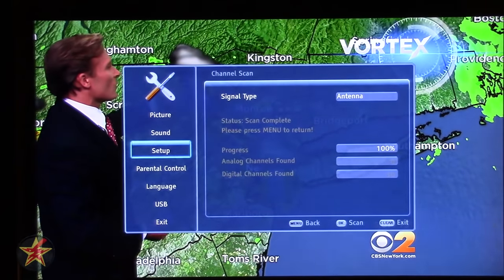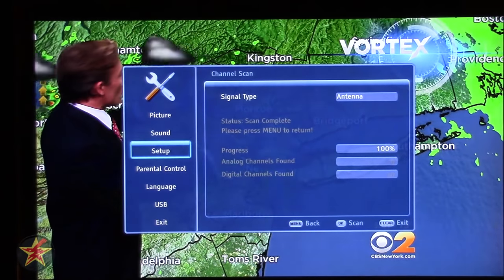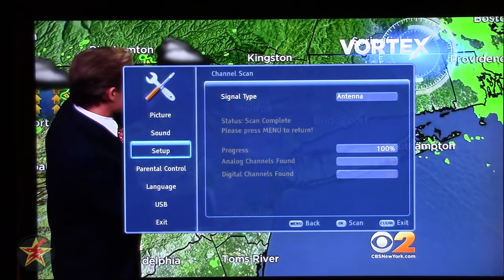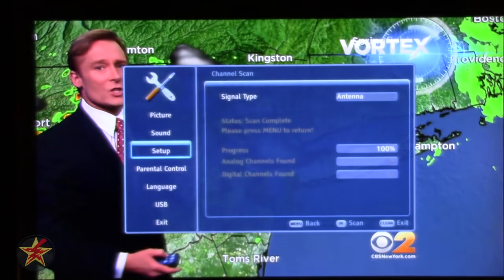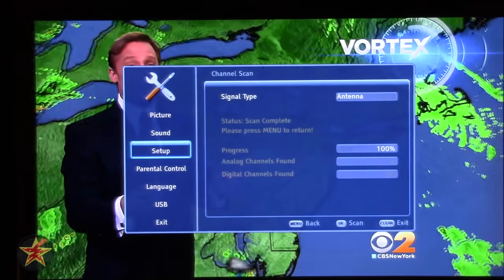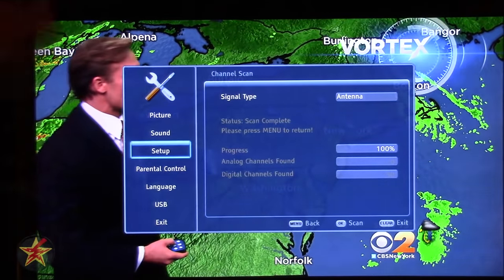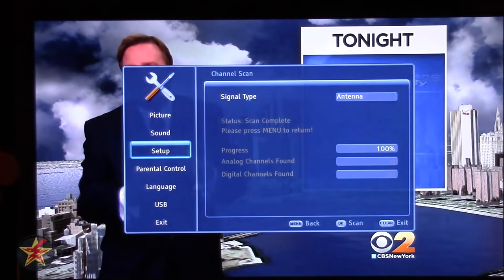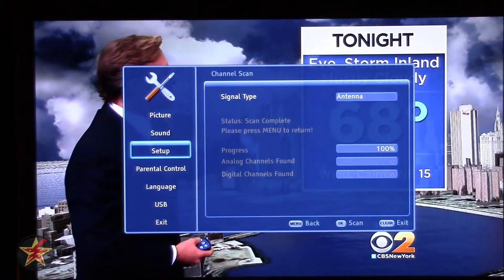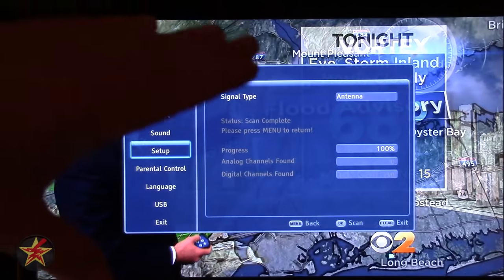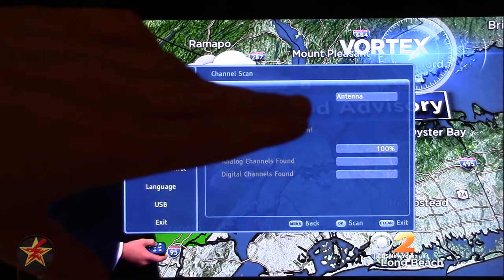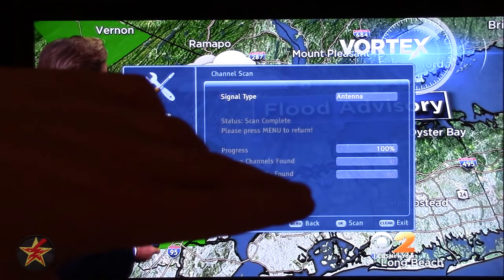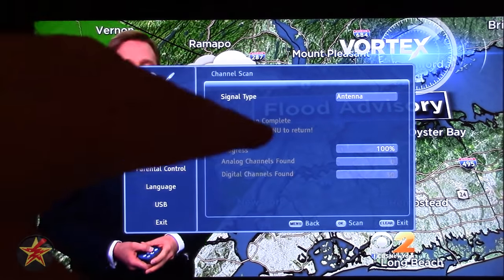So this is the second time I scanned for channels with the Mohu Leaf. You'll notice that currently you can see that there is a picture happening in the background, that's because I apparently left it on a channel that it did pick up. You'll notice here that it's showing it's 100% complete and it's showing 30 channels have been picked up.